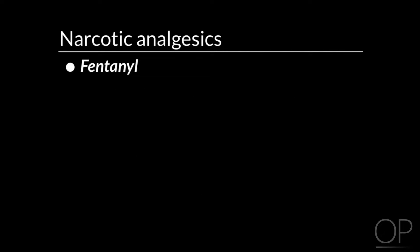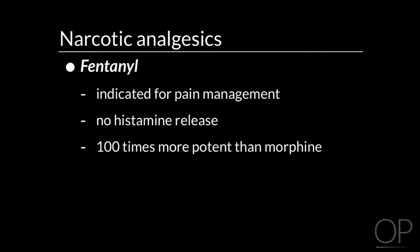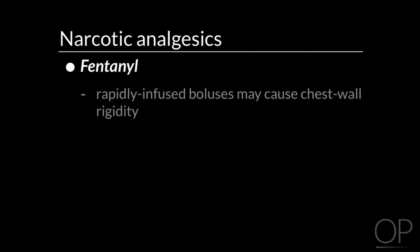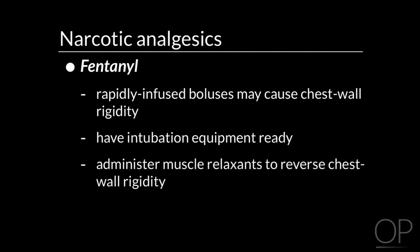Fentanyl is a synthetic opioid analgesic indicated for pain management. Infants may tolerate fentanyl better than morphine because there is no histamine release with administration. It is 100 times more potent than morphine. Fentanyl is metabolized in the liver and excreted in the urine. Rapidly infused bolus doses may cause chest wall rigidity. As a precaution, have intubation equipment ready and administer muscle relaxants to reverse chest wall rigidity.